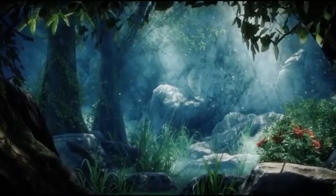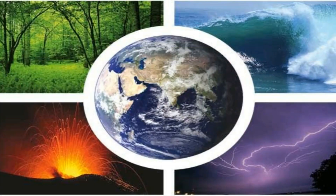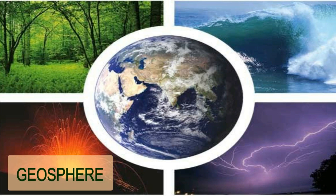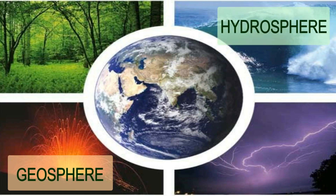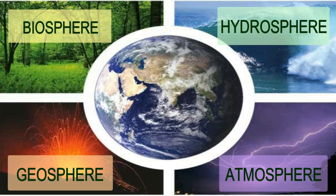Now let us continue with the Earth's four subsystems. The biophysical components of the Earth system are often referred to as spheres, and are subdivided into four: the geosphere, hydrosphere, atmosphere, and biosphere. These four regulate the different functions on the Earth.